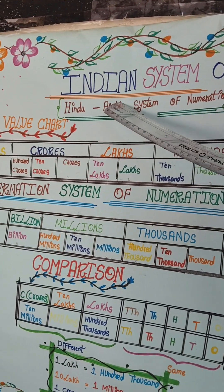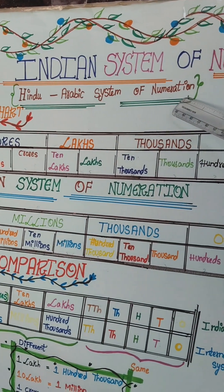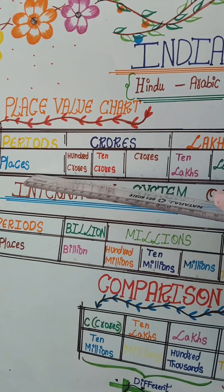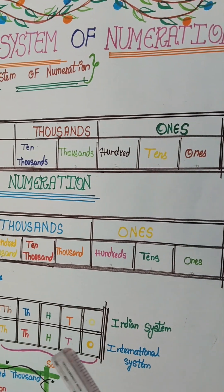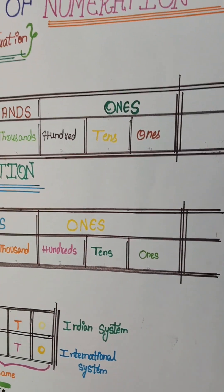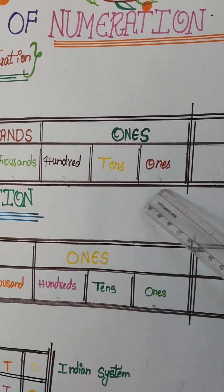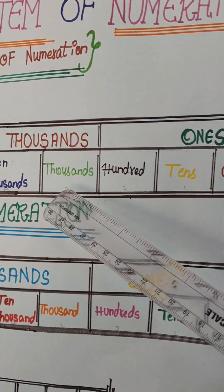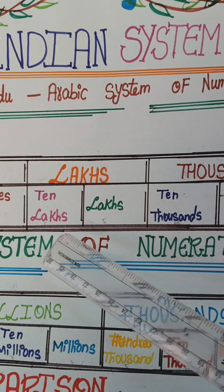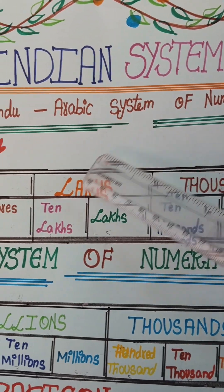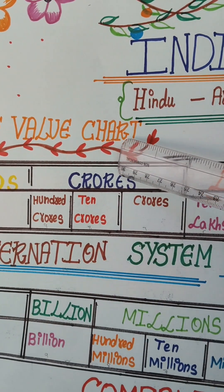Why is it called so? Because it originated in India, and it is also known as the Hindu-Arabic system of numeration. Now coming to the place value chart: we have places and periods. Numbers are placed according to their place value, and the numbers progress from right to left. We have ones, tens, hundreds — these three places are grouped in the ones period. Then we have thousands and ten thousands — these two places are grouped in the thousands period. Then we have lakhs and ten lakhs — these two places are grouped in the lakhs period. Then we have crores, ten crores, and hundred crores — these three places are grouped in the crores period.